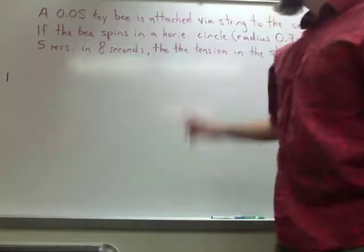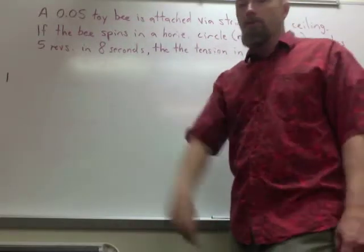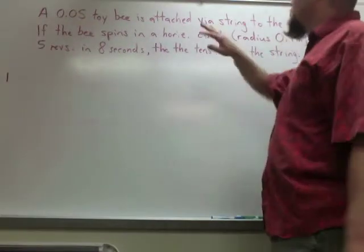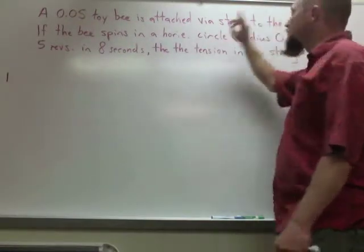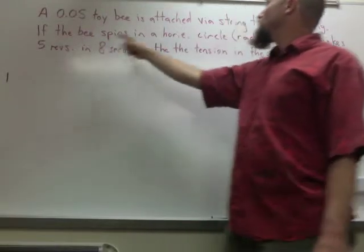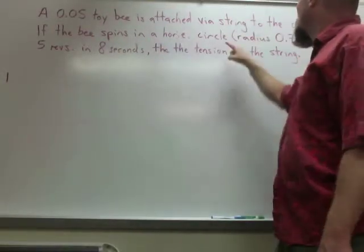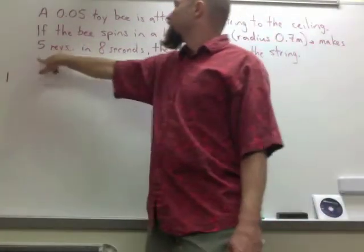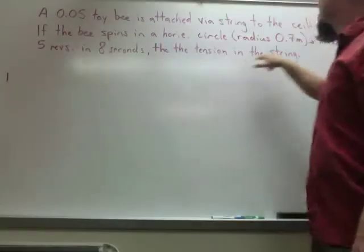Kids? Alright, we're going to do a little circular motion problem here. It says you have a 0.05 toy bee attached to the ceiling via string. This bee spins in a horizontal circle. The radius is 0.7 meters. It makes 5 revolutions in 8 seconds. Determine the tension.